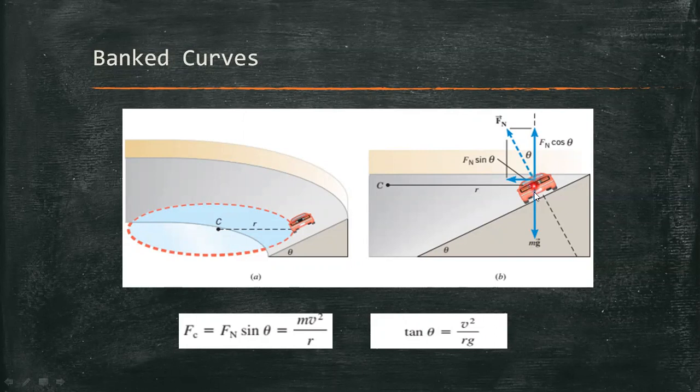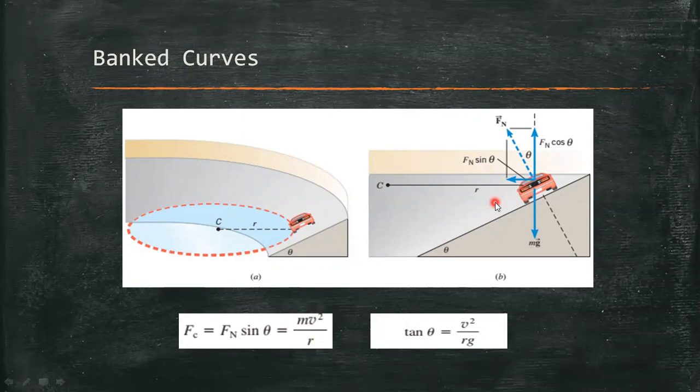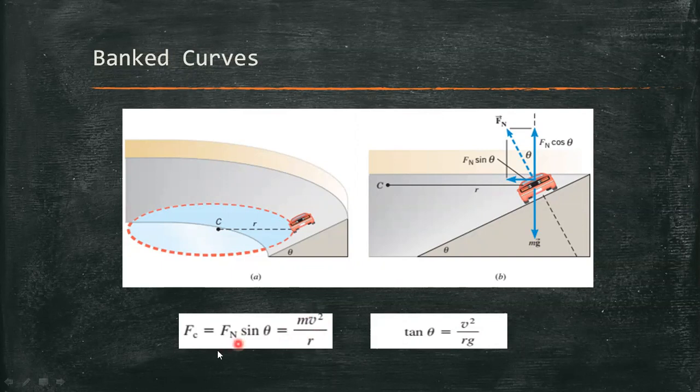And since we are dealing with centripetal force, and it always directed at the center of the circular motion or the circular path, the horizontal component of the normal force is our centripetal force, which is equivalent to sin theta of the normal force. This force is equal to the mass times the square of the velocity divided by the radius.